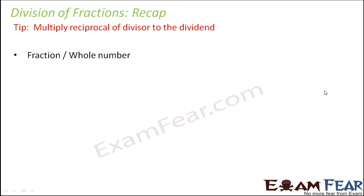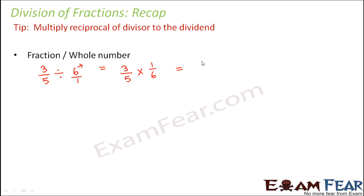The first scenario is fraction divided by a whole number — for example, three by five divided by six. Six is the divisor, so this means three by five multiplied by the reciprocal of six, which is one by six. Multiplying gives three by thirty, which reduces to its simplest form: one by ten.